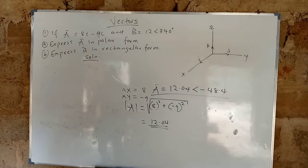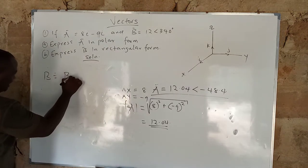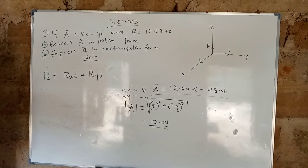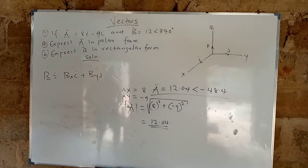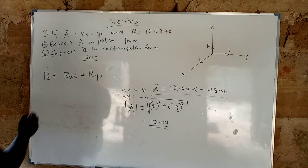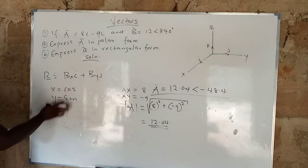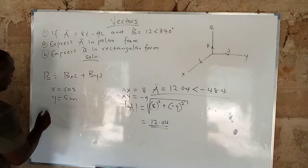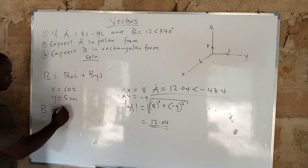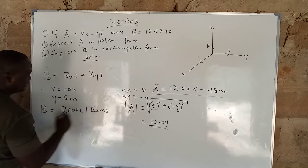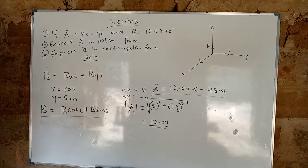The rectangular form of a vector is: B equals Bx·i plus By·j. When converting polar to rectangular, X always goes with cosine and Y always goes with sine. So the formula becomes: B equals B·cosθ·i plus B·sinθ·j. Note it very well — X is cosθ and Y is sinθ.